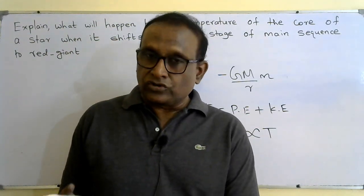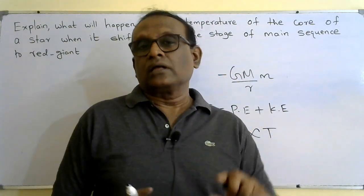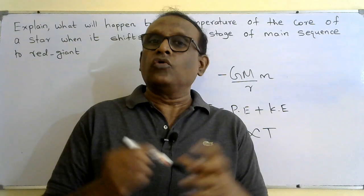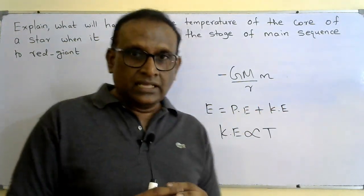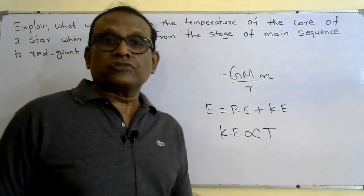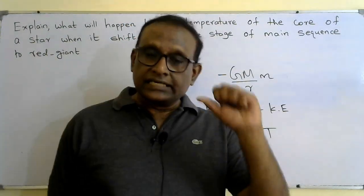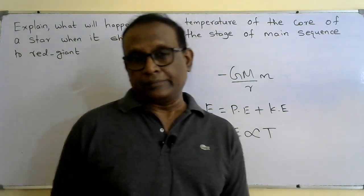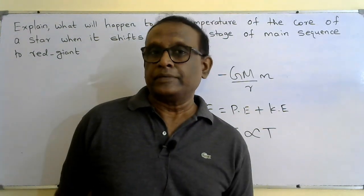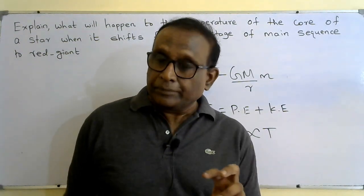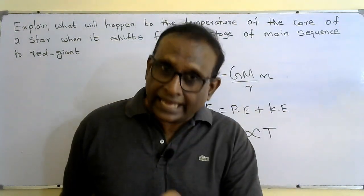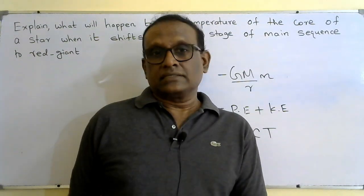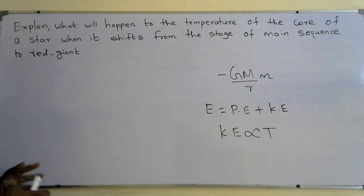So when a star shifts from main sequence to red giant state, initially the core has no fusion, so the core will shrink — the radius of the core decreases. The temperature of the core increases because gravitational potential energy decreases, kinetic energy increases, and kinetic energy is directly proportional to absolute temperature. The core temperature can become even higher than it was during the main sequence because it shrinks so much.